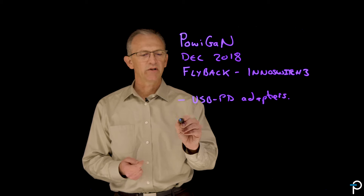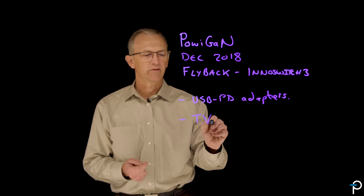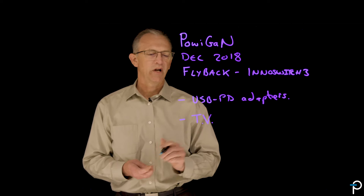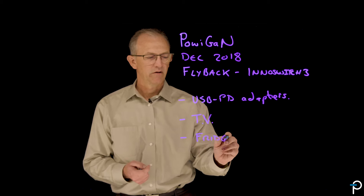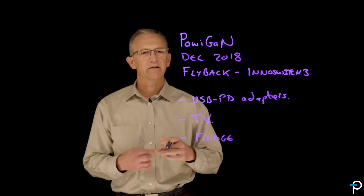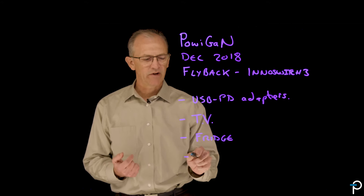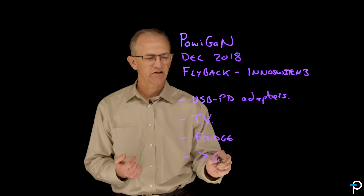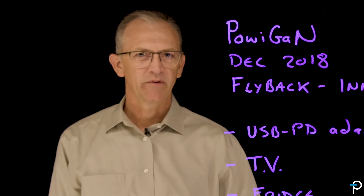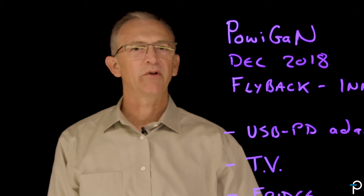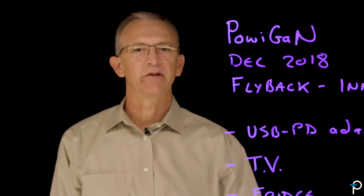Other applications are quite surprising. We've seen applications in TVs — ordinary consumer products like TVs — and we've had applications in refrigerators. It's expanding very, very broadly. At the moment, we've counted over 60 other applications. So what this means for you as a designer is that there's going to be an awful lot of gallium nitride related product out there in the market in a very, very wide range of fields.